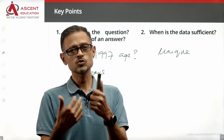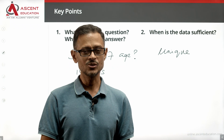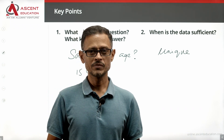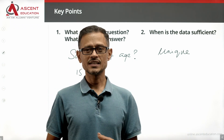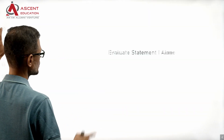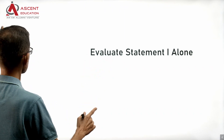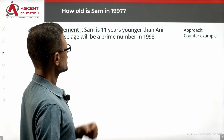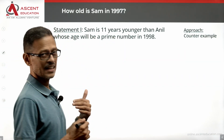If you have multiple possible answers, then the data is not sufficient. On this note, let's take a look at Statement 1 alone. Statement 1 says: Sam is 11 years younger than Anil.